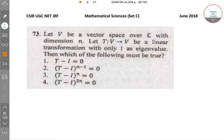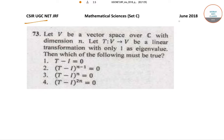Hello students, welcome to Sources Classes. Today we will be solving the CSIR UGC NET questions from the June 2018 paper. We will be solving Set C of the Mathematical Sciences paper. So let's start off with question number 73.